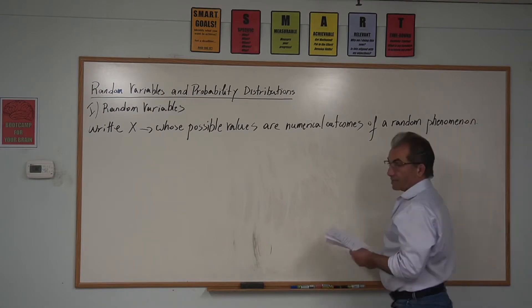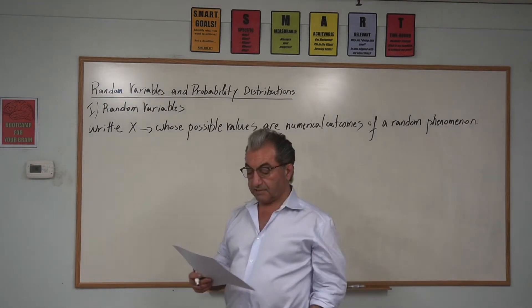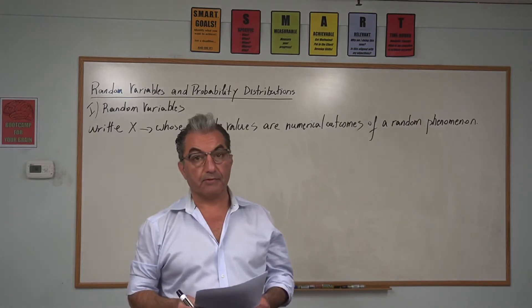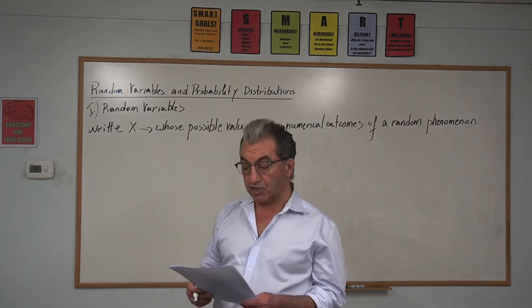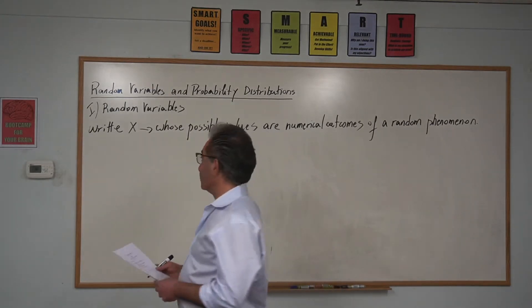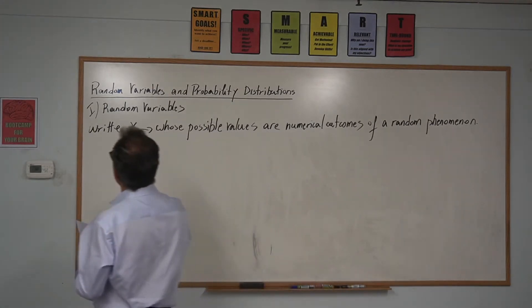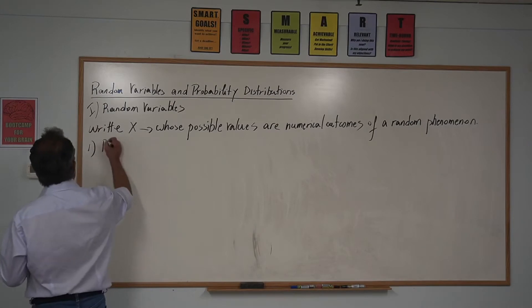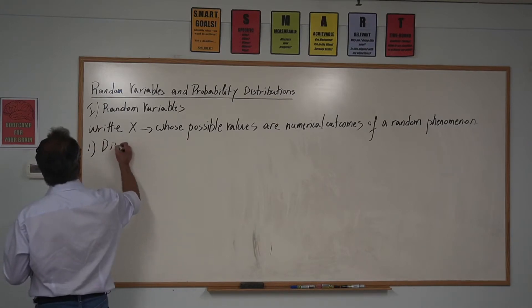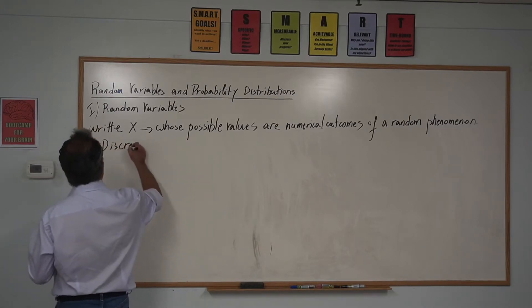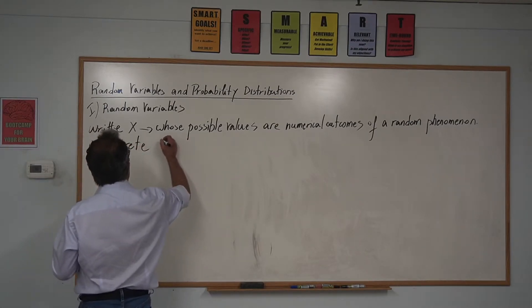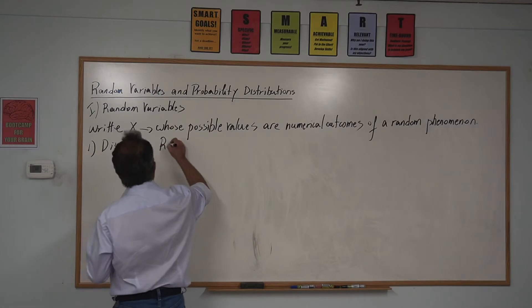Now I'll tell you the details about this, but the first thing I want you to know is that there are two types of random variables. Number one, we have discrete random variables.